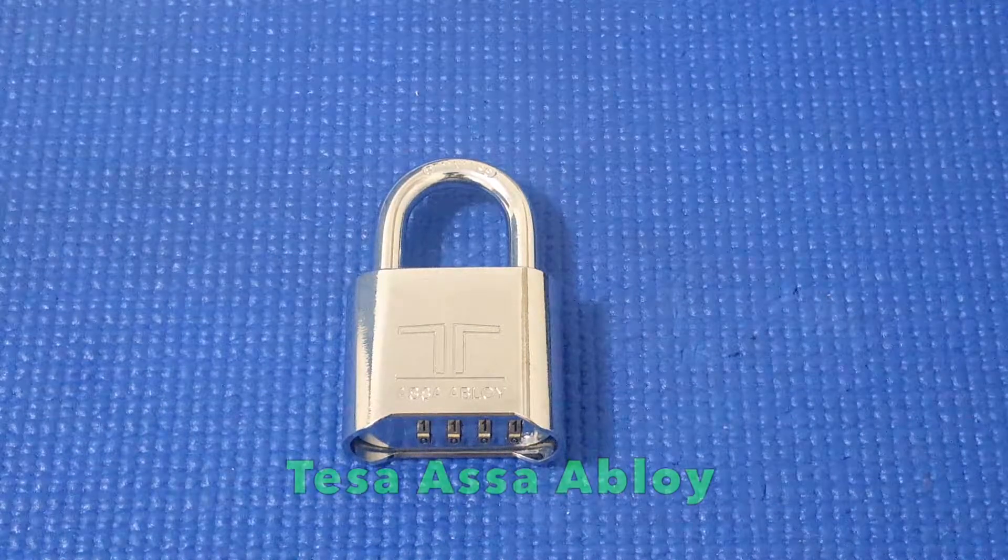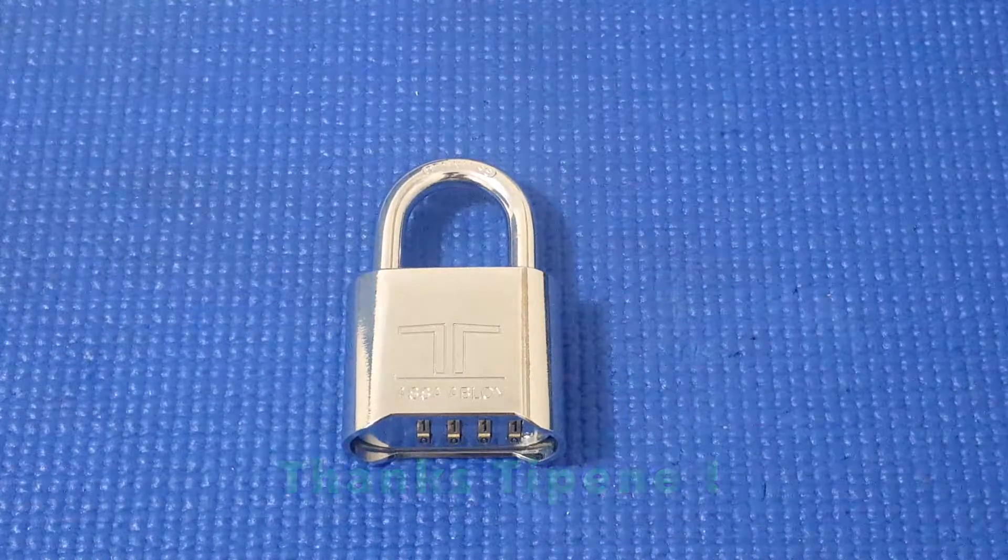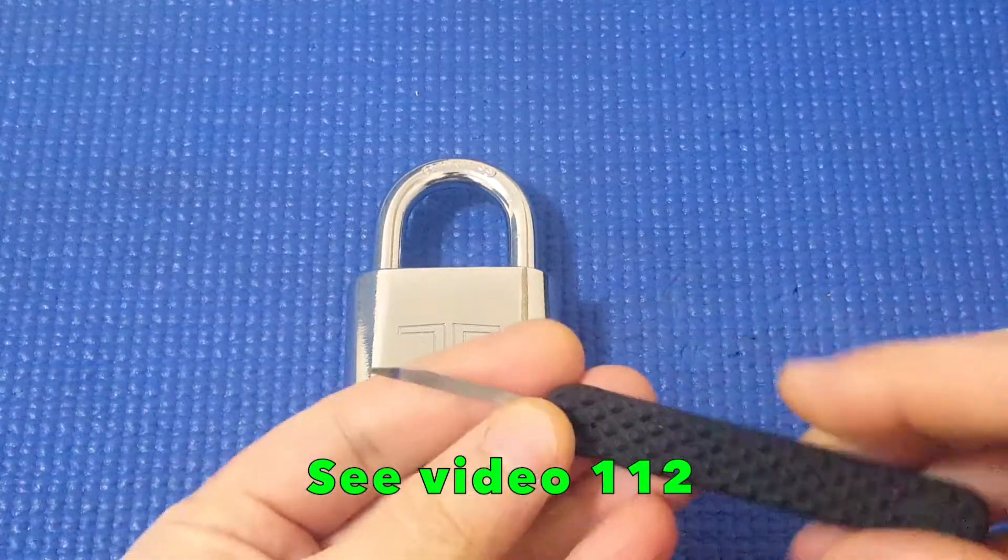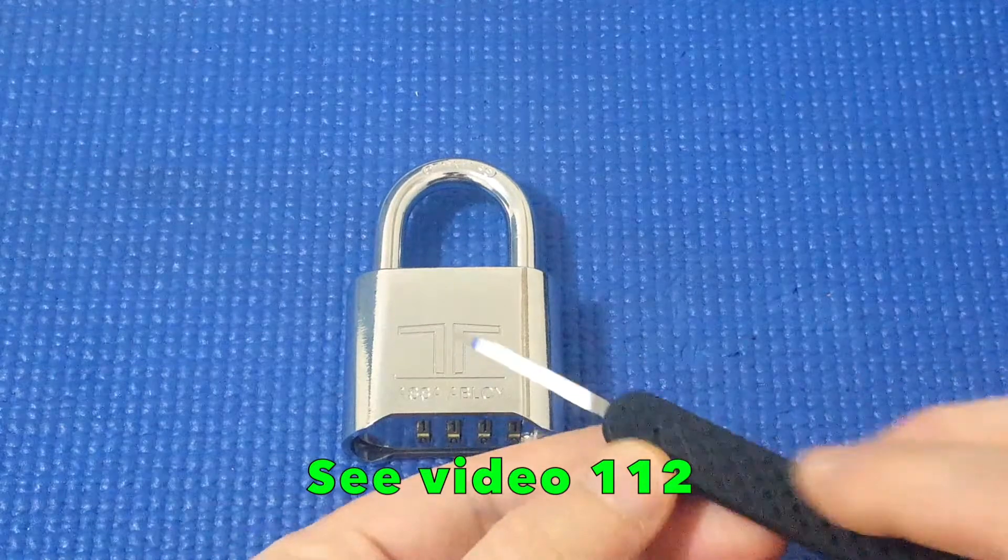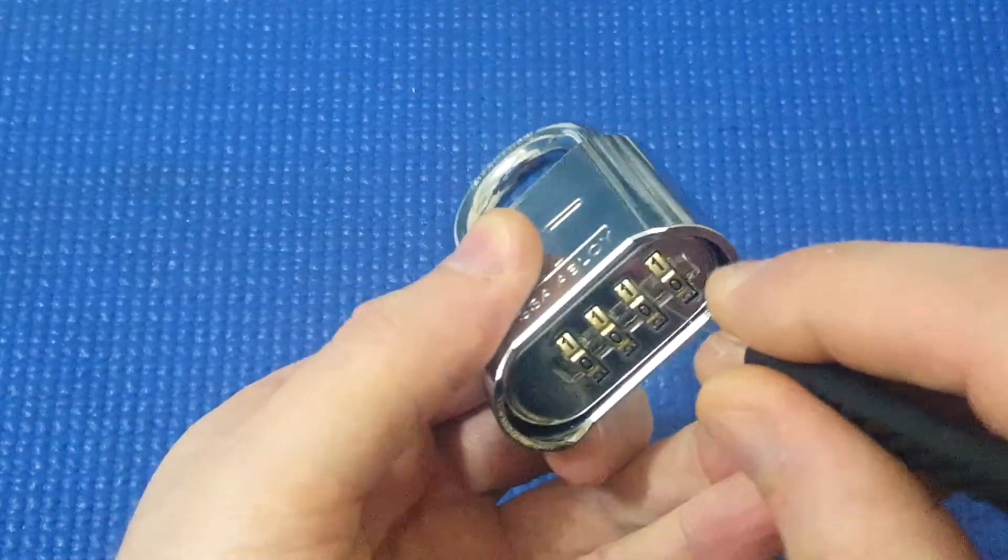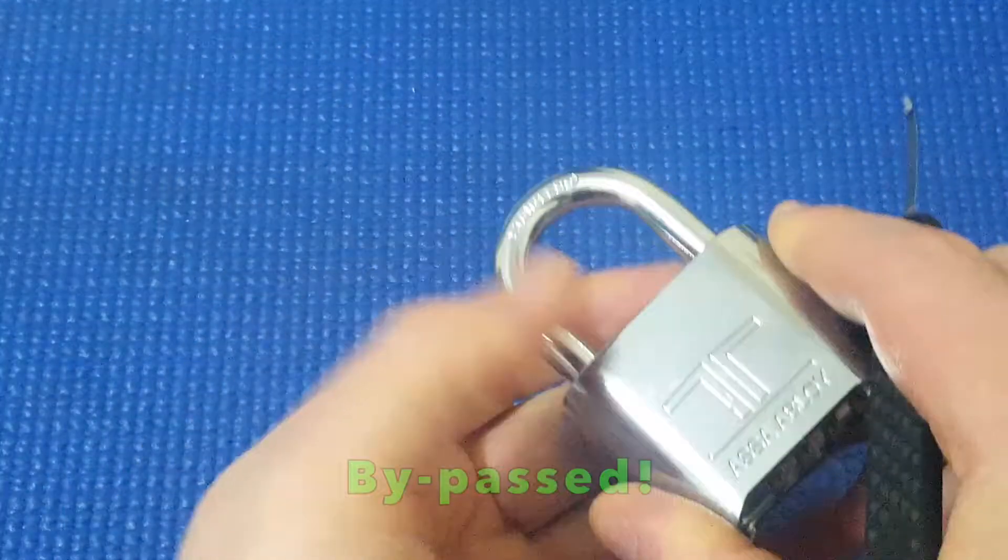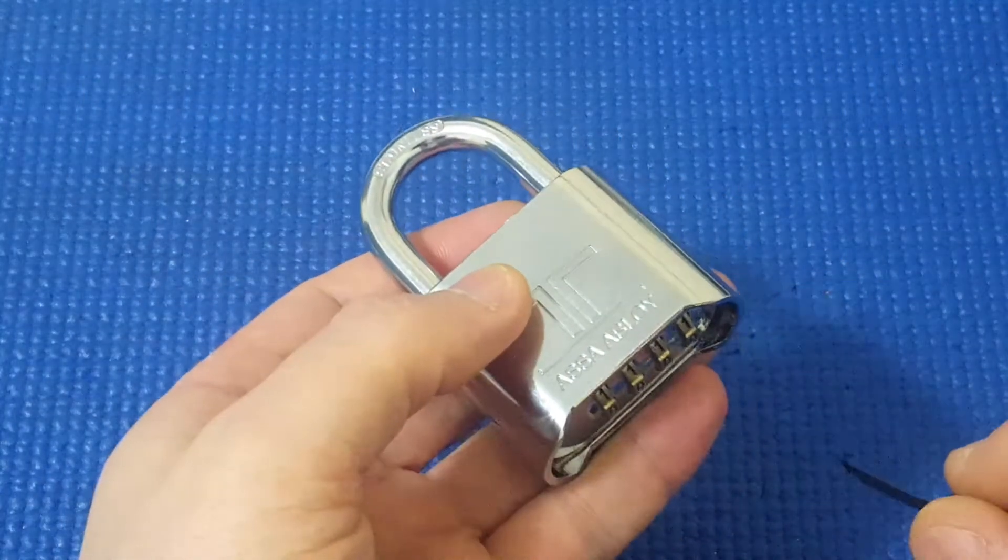I've already done a video on this Tessa S Abloy from Spain that Tiffany gave me, and in that video I showed that a Sparrows ultra decoder like this can be inserted in and pushed back and it can open the shackle quite quickly using a bypass method.